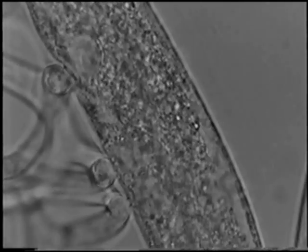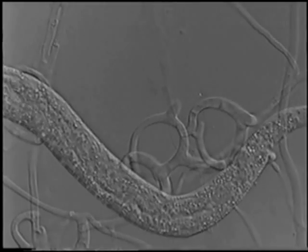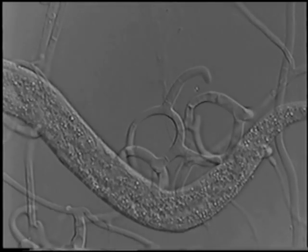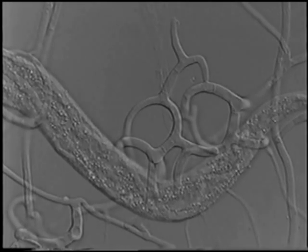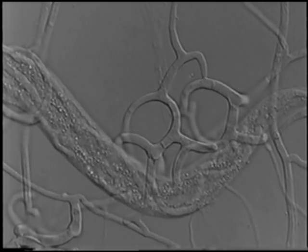From the infection bulb, trophic hyphae develop in which lipid droplets accumulate. The accumulated nutrients promote the development of new mycelium and new trap formation.